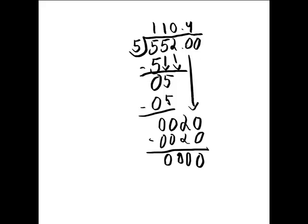So can 5 go into 0? No it can't. So you bring down this 0. And 5 still can't go into 0. So you add a 0 here to show that it can't go into 0. So what this would mean is, each person would get $110.40. So if we had $552 and we wanted to divide it in 5 people, each person would get $110.40.